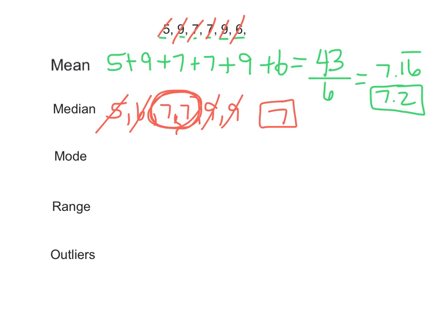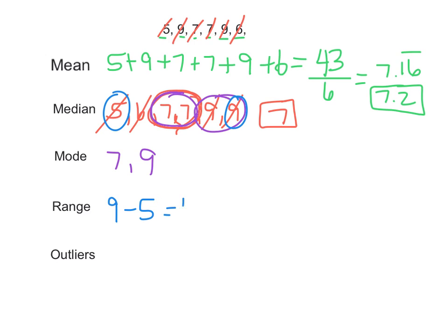Mode is the most common number. In this data set, 7 occurs more than once and 9 occurs more than once, so both of those are modes. To find the range, we do the biggest minus the smallest: 9 minus 5, and that gives us a range of 4.